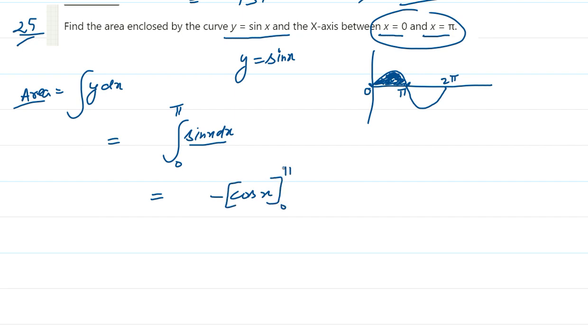So the integration of sin x dx is basically minus cos x, and the limits are 0 to π. We take the minus outside, then we put the limits: it is basically cos π minus the lower limit is cos 0.